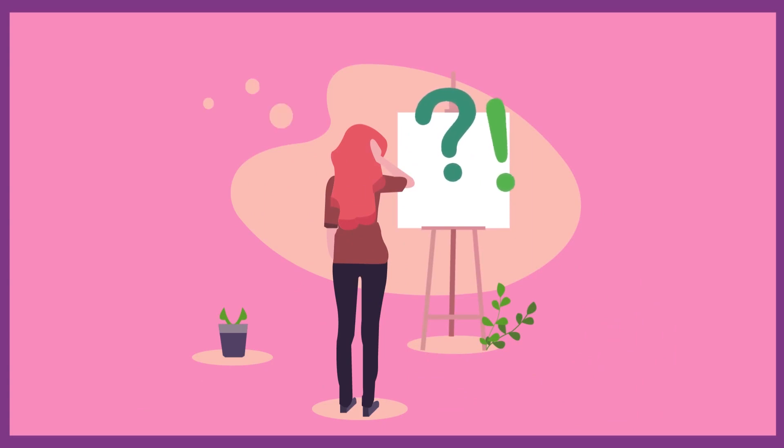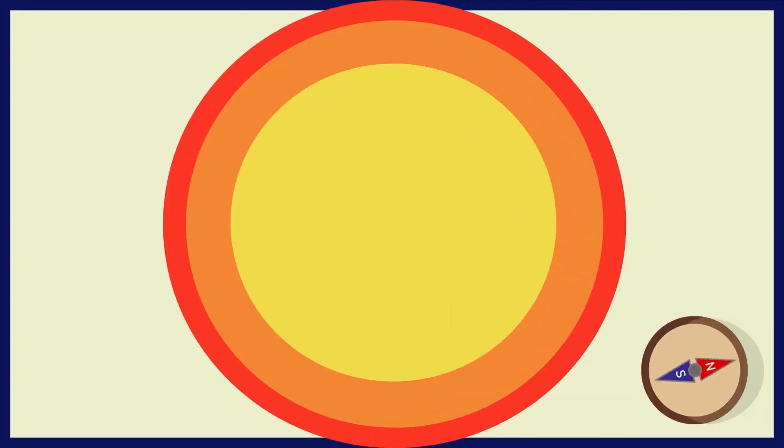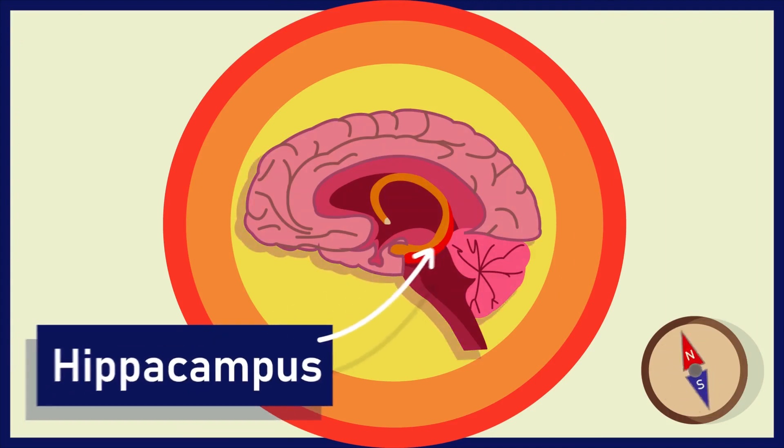Speaking of the memory, have you ever wondered how our brains actually save memories and recall it? Memory is saved in many parts of the brain, depending on their use.